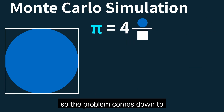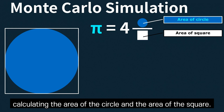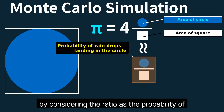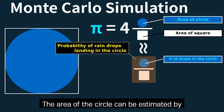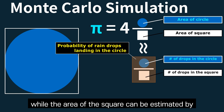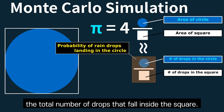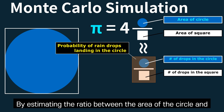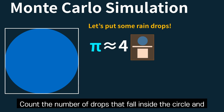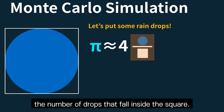The problem comes down to calculating the area of the circle and the area of the square. We can estimate those areas by considering the ratio as the probability of raindrops landing in the circle. The area of the circle can be estimated by the number of drops that fall inside the circle, while the area of the square can be estimated by the total number of drops that fall inside the square. By estimating this ratio, we can estimate the value of pi.